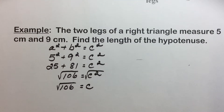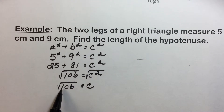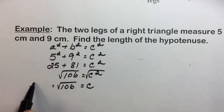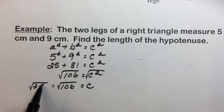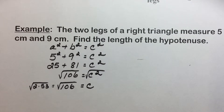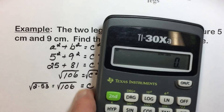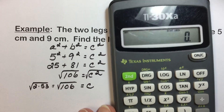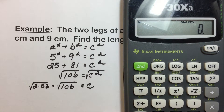If we try to simplify this, 106 breaks down into 2 times 53. Both of these numbers are prime, so this is an exact radical which we cannot simplify any further.